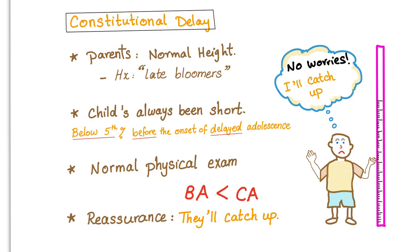He is short now and will be delayed to reach adolescence. However, he will catch up later in life. Physical exam is totally normal. Bone age is less than chronological age. The management is reassurance — no worries. Your kid will catch up and will be just fine.